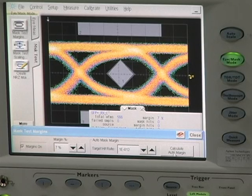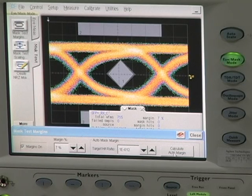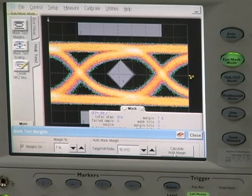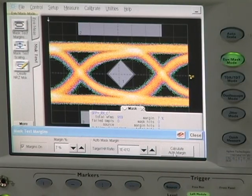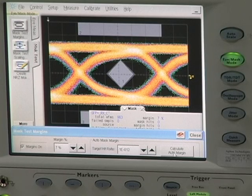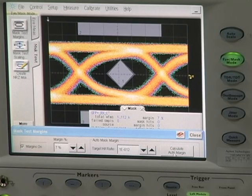So this is taking a look at the mask margin with the 20 meter Avago Technologies SFP Plus active optical cable. As you can see right now it's passing the 10 gigabit ethernet mask. And as you can see when we compared it to the copper cable, the copper cable obviously failed and the mask margin was actually negative 27%.